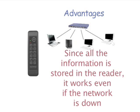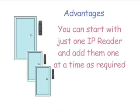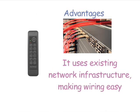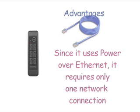Since all the information is stored in the reader, it works even if the network is down. You can start with just one IP reader and add them one at a time as required. It uses the existing network infrastructure, making wiring easy. It's compatible with other network devices like IP cameras. Since this uses power over Ethernet, it requires only one network connection.